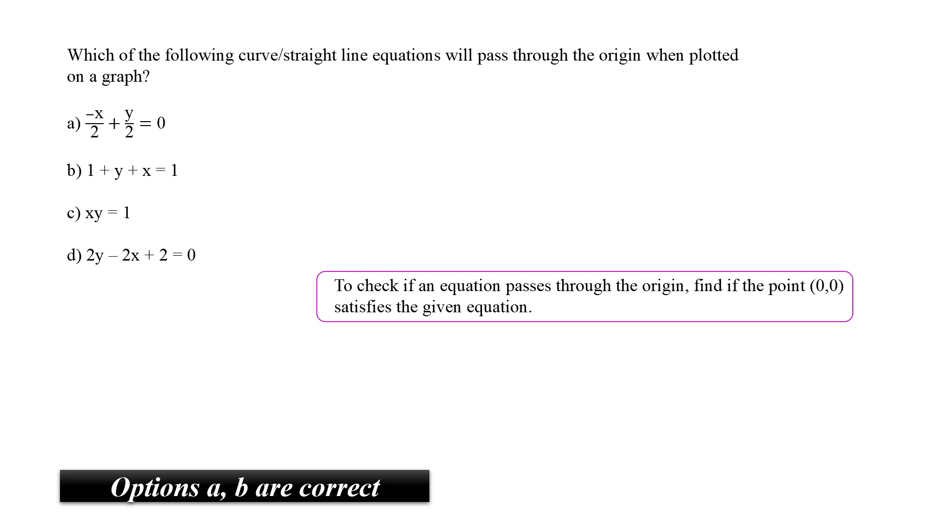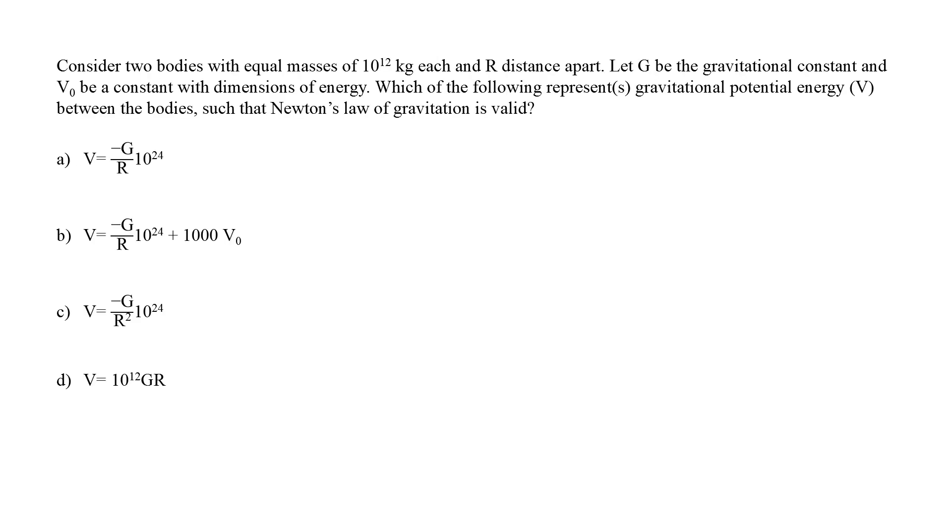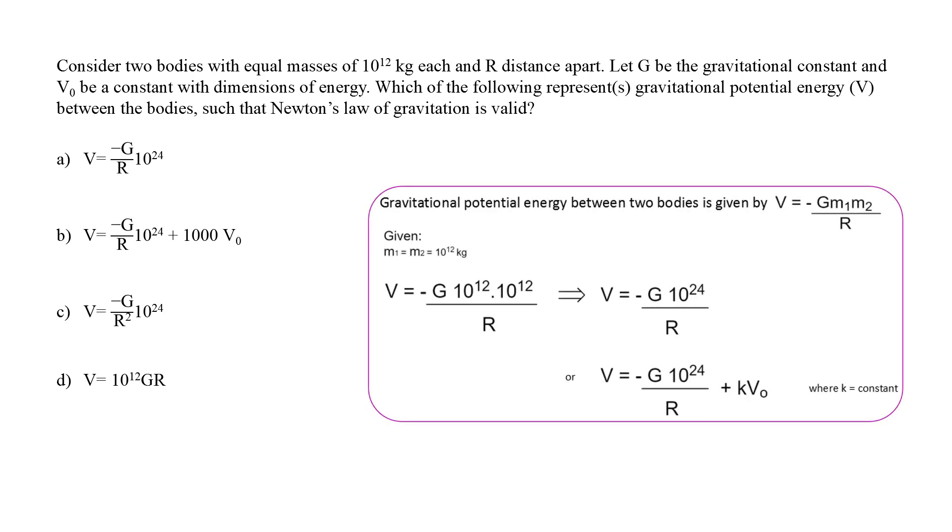The next question is, Consider two bodies with equal masses of 10 to the power 12 kg each and R distance apart. Let G be the gravitational constant and V0 be a constant with dimensions of energy. Which of the following represent gravitational potential energy between the bodies such that Newton's law of gravitation is valid? As per the Newton's law of gravitation, the gravitational potential energy between two bodies is given by V is equal to minus G M1 M2 by R. It is given in the question that M1 and M2 are equal that is 10 to the power 12 kg. Therefore, V is equal to minus G into 10 to the power 24 divided by R, which is option A.